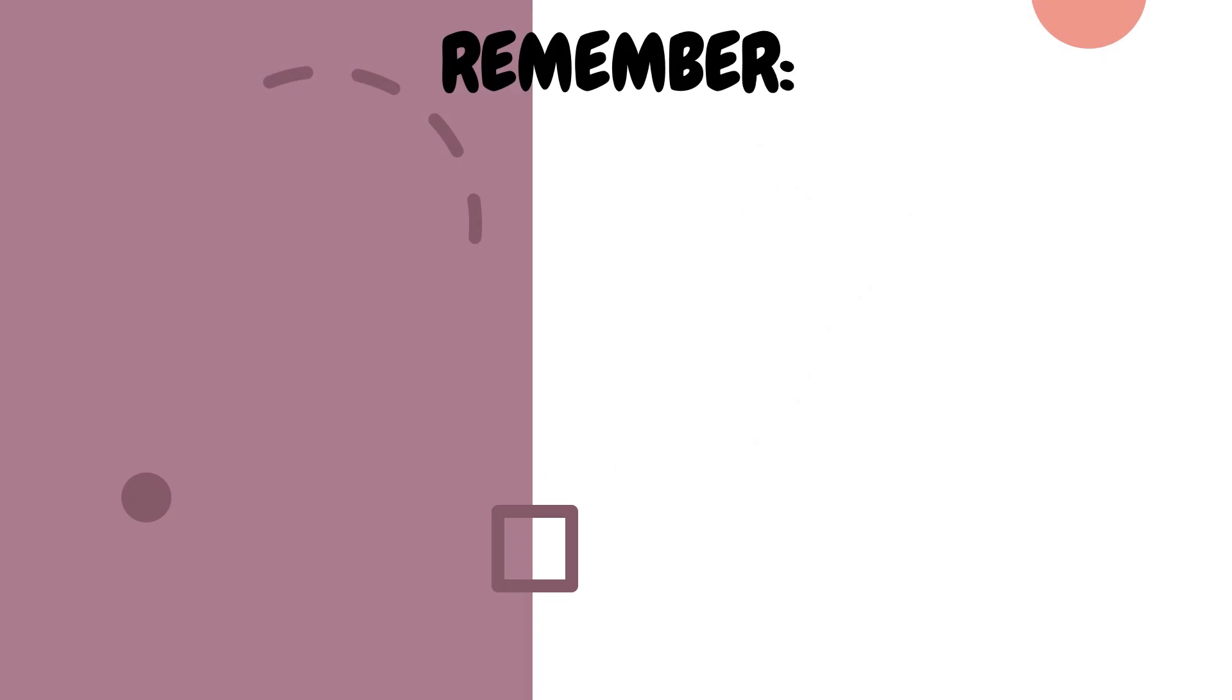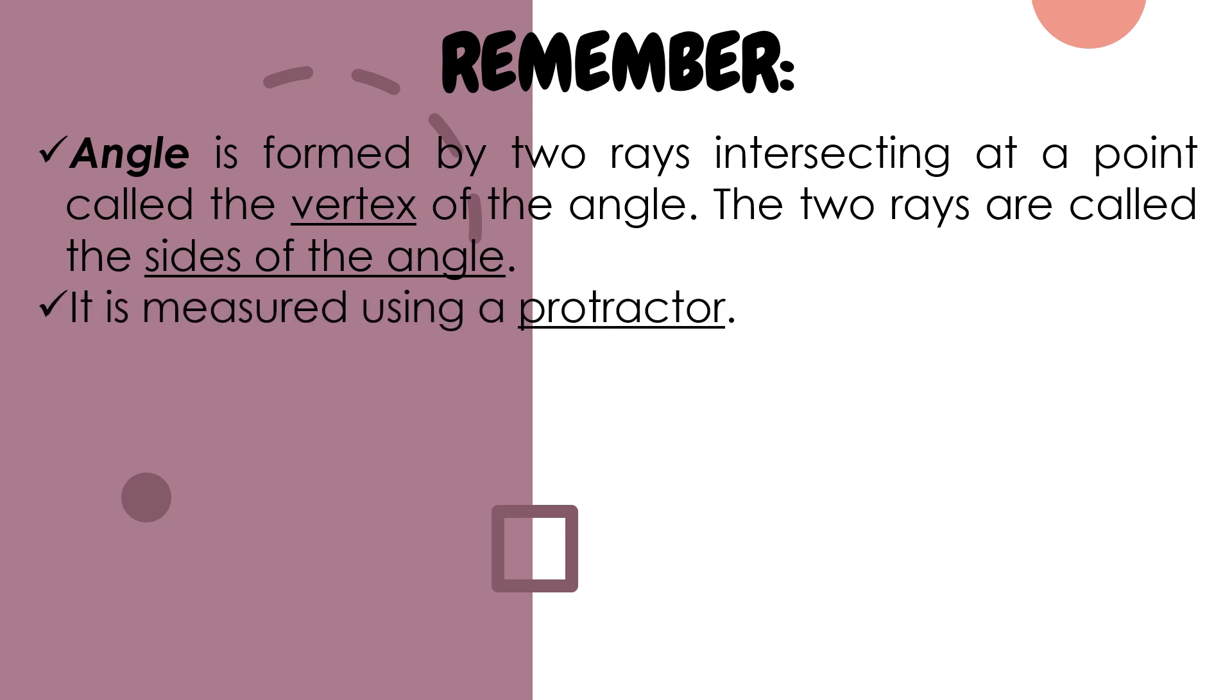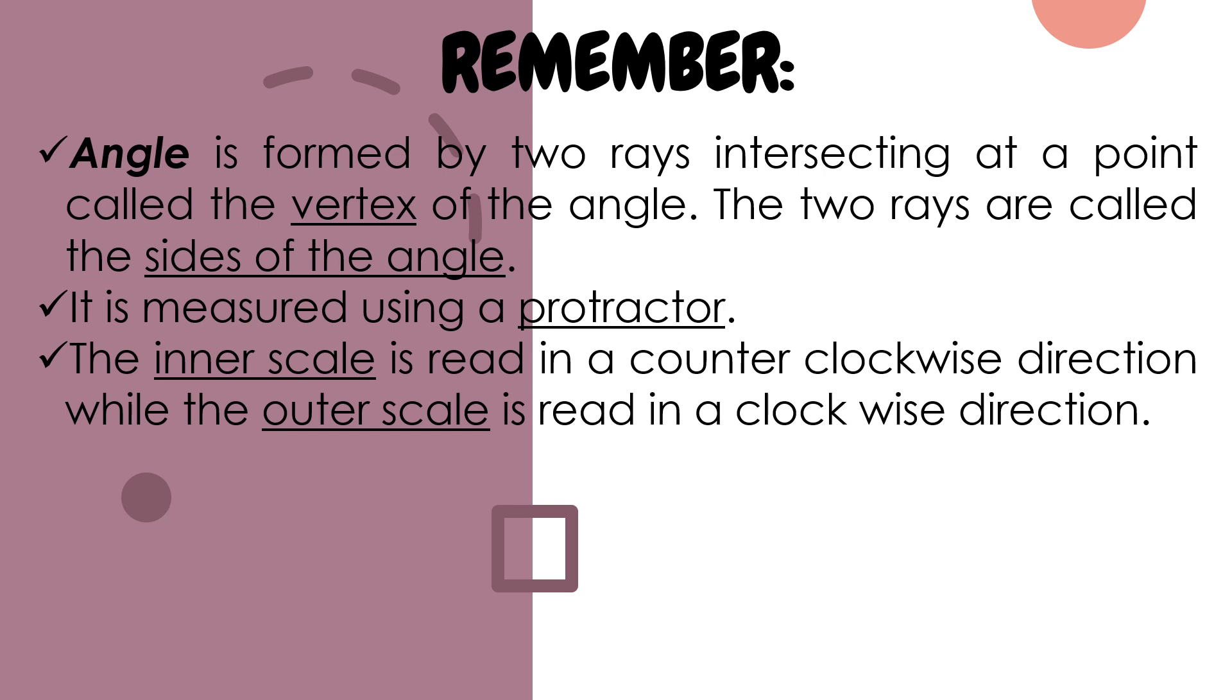Let us now summarize about measuring angle. Angle is formed by two rays intersecting at a point called the vertex of the angle. The two rays are called the sides of the angle. It is measured using a protractor. The inner scale is read in a counterclockwise direction, while the outer scale is read in a clockwise direction.